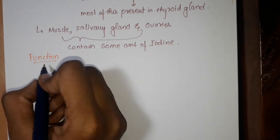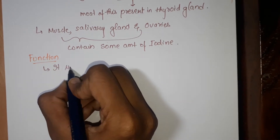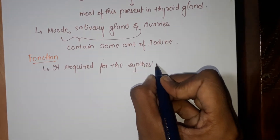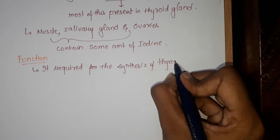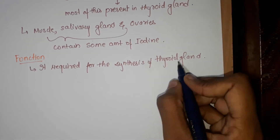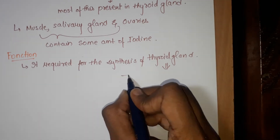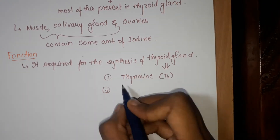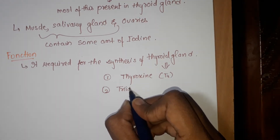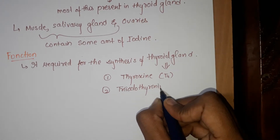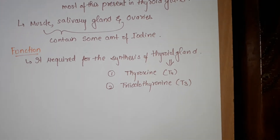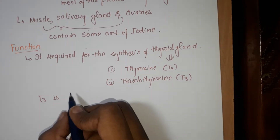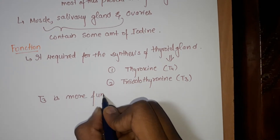Now the function of iodine: the only function of iodine is that it is required for the synthesis of thyroid gland hormones — like T4 (thyroxine) and T3 (triiodothyronine). T3 is more functionally active than T4.